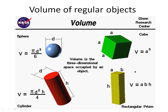While mass is one half of the density equation, let's talk about the other half, which is volume. There are a few ways we can get the volumes of objects. There are liquids, regular objects, and irregular objects. So let's talk about regular objects first.